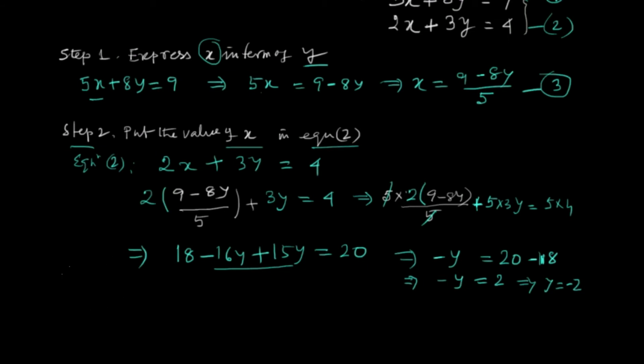Now we will put this value of y in relation or equation 3. So x equals 9 minus 8 times minus 2 over 5. That's 9 plus 16 over 5, which equals 25 over 5, equals 5.